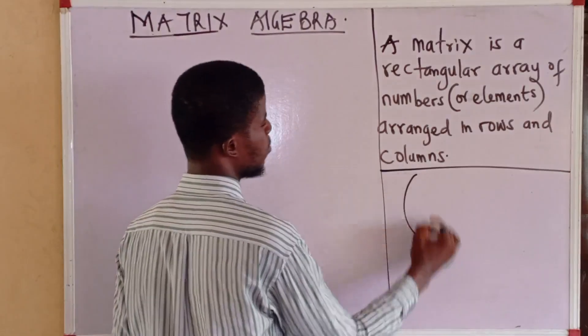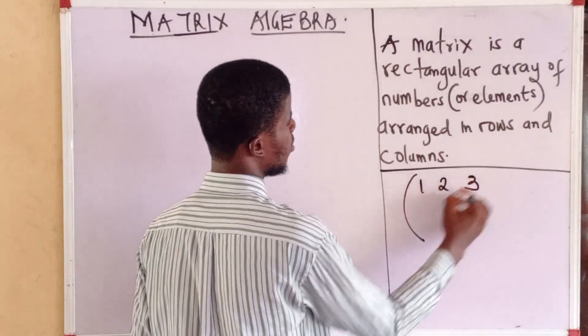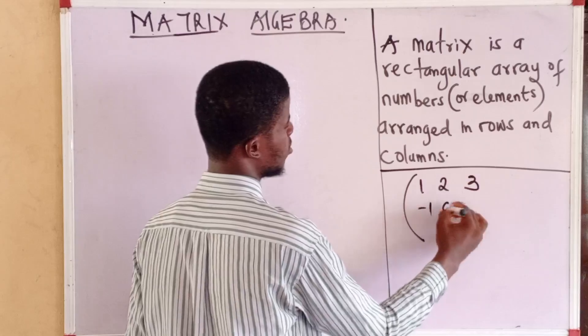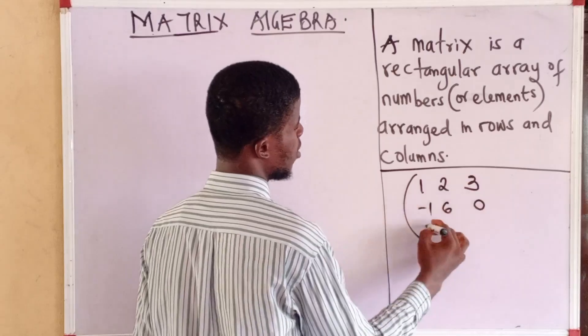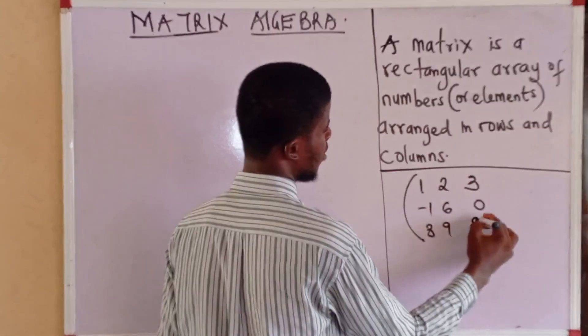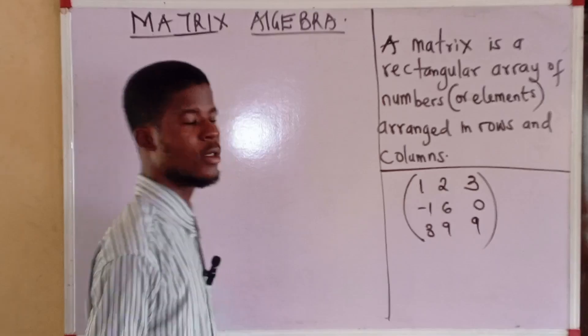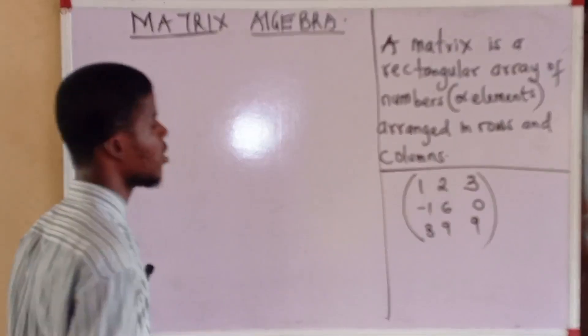This is a matrix, for example: 1, 2, 3, minus 1, 6, 0, 3, 9, 9. Here's a matrix.